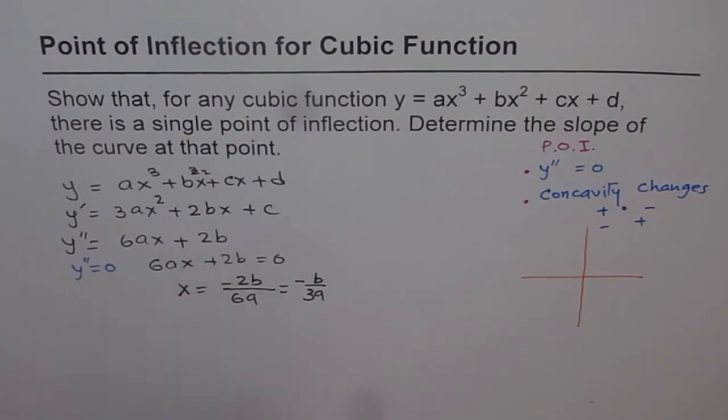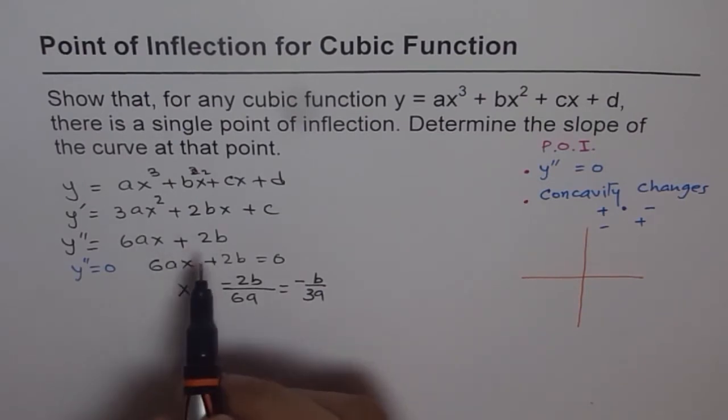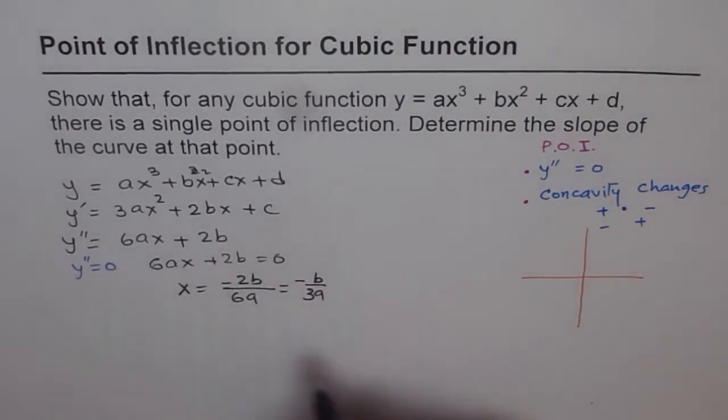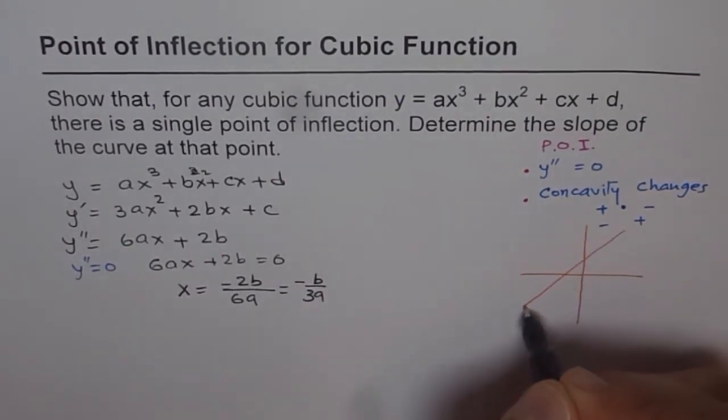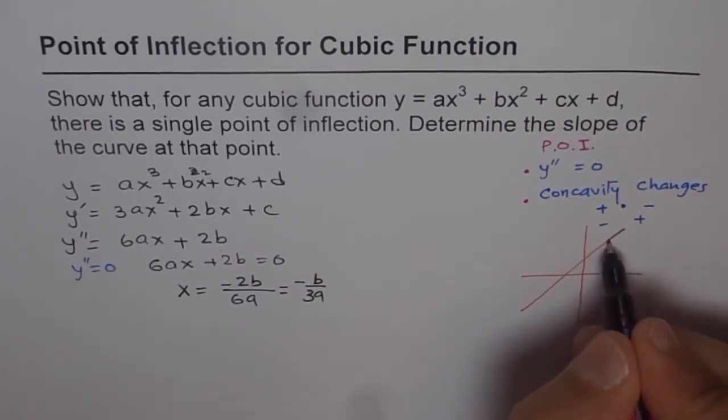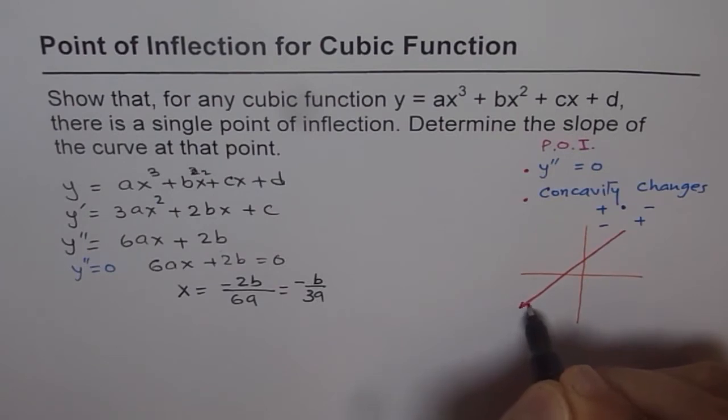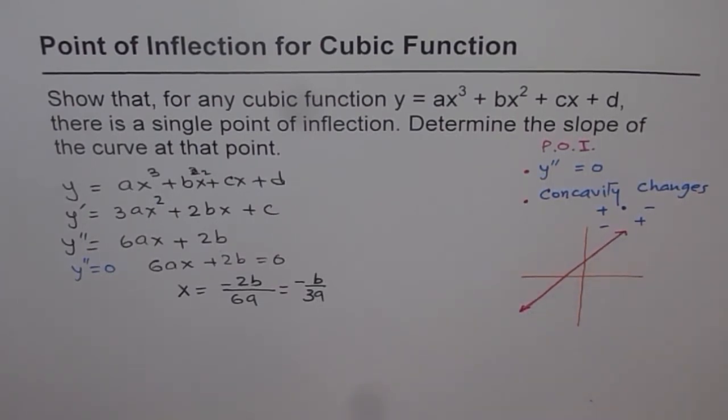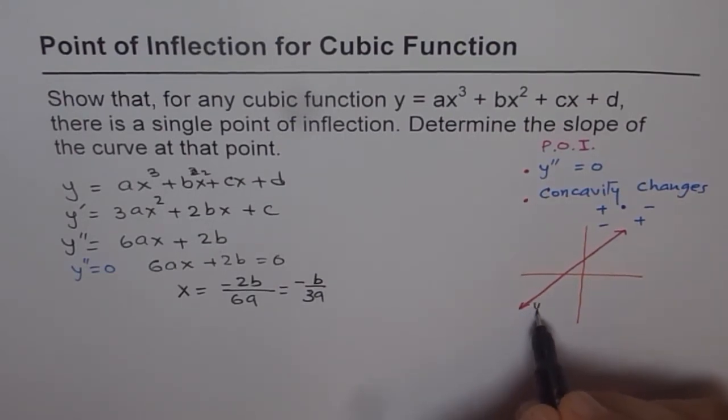If I have to draw a graph of this function 6ax plus 2b, which has a zero somewhere, which is minus b over 3a, let us assume that these are all positive values for the time being. So we know the slope is 6a and 2b is kind of y-intercept. So I am just drawing a line which is kind of like this.